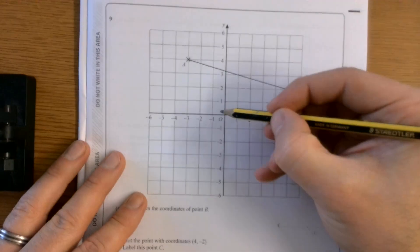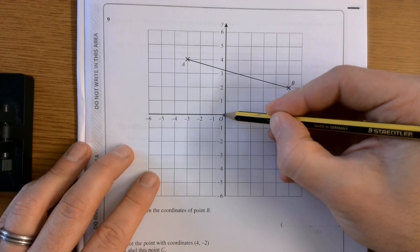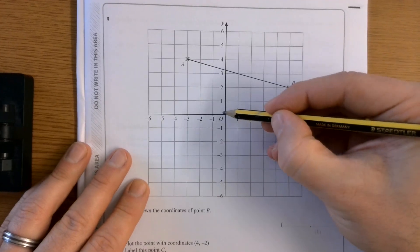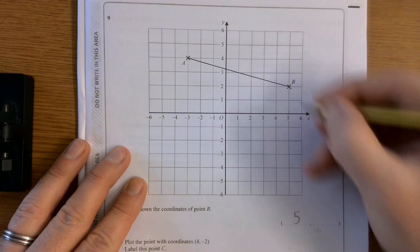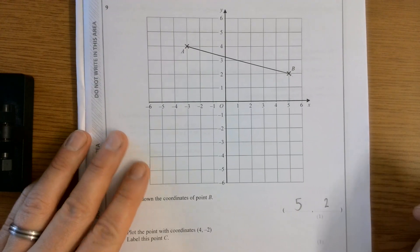Right. This one. Write down the coordinates of B. So I always start at the origin, 0, 0. And if I want to get to B, I go 1, 2, 3, 4, 5 units to the right. And then I go 2 units up. So my coordinate would be 5, 2.